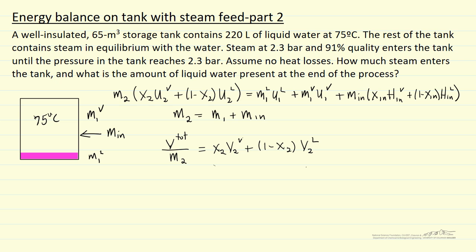This problem starts with a tank containing liquid and vapor. We're going to add steam that has quality at a higher pressure and continue to add it until pressure equalizes at 2.3 bar. The question we're trying to determine is how much mass we have added to get to equal pressure.